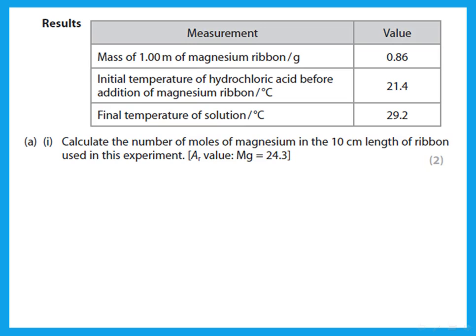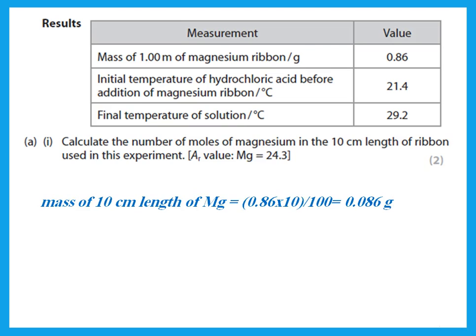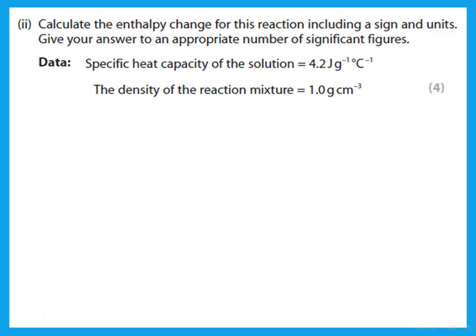Calculate the number of moles in the 10 cm length of ribbon. Notice that he weighed one meter of ribbon — this was 0.86 g. He then cut it into 10 cm lengths for the experiment. So the mass of the 10 cm piece is 0.086 g. The number of moles is mass over molar mass: 0.086 ÷ 24.3, which gives the number of moles of magnesium used.